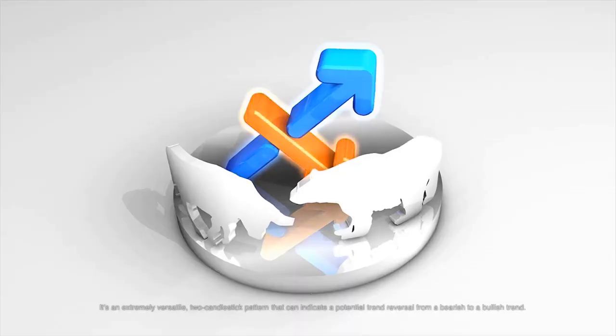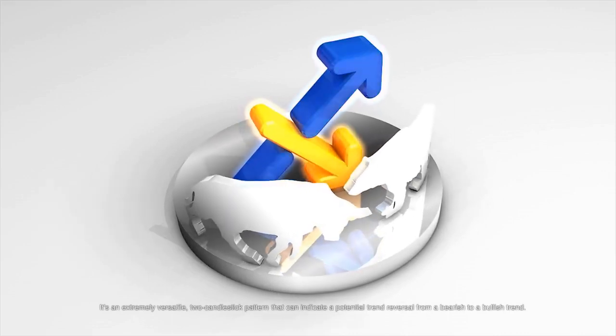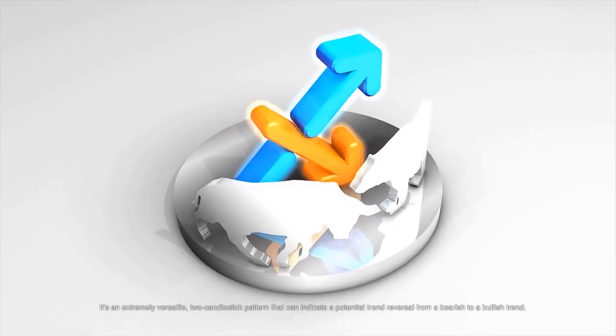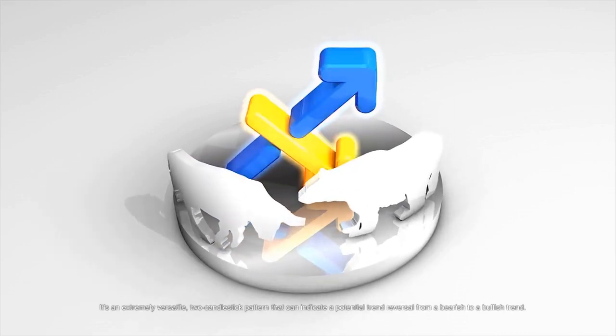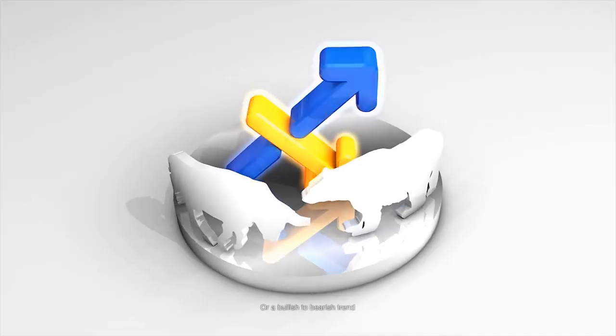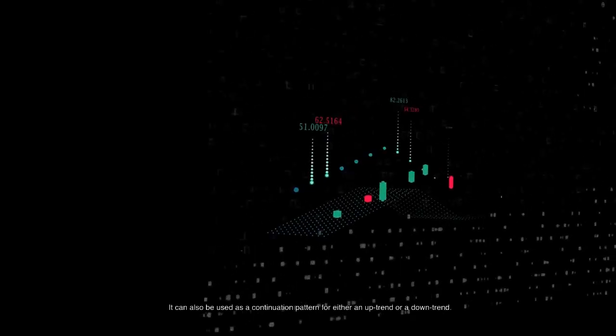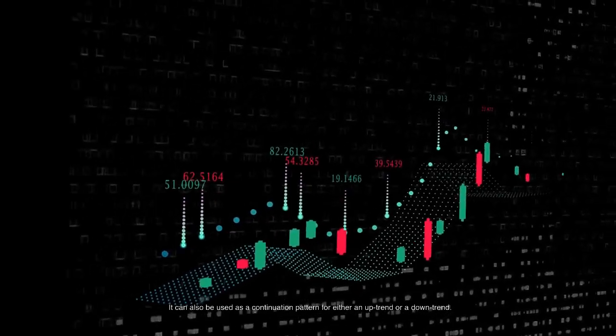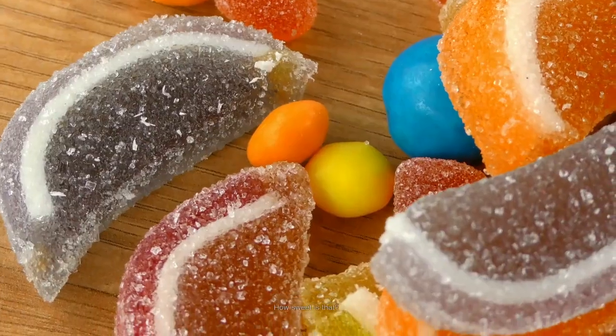So, what is the Harami Candlestick Formation? It's an extremely versatile two-candlestick pattern that can indicate a potential trend reversal from a bearish to a bullish trend, or a bullish to bearish trend. It can also be used as a continuation pattern for either an uptrend or a downtrend. How sweet is that?